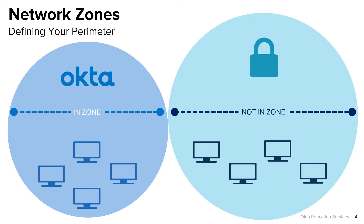You can then build Okta sign-on policies or application-level sign-on policies which leverage your network zones. Or, in the case of attempts coming from known malicious IP addresses or locations, or perhaps an attempt via a mechanism such as a Tor anonymizer, you can simply instruct Okta to block the request at the Okta router level, meaning the attempt never reaches your Okta org's gateway.